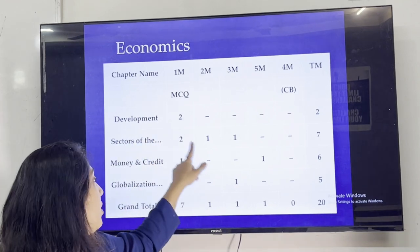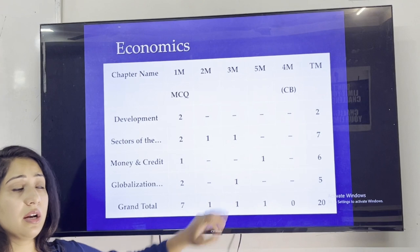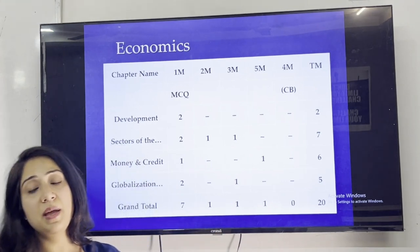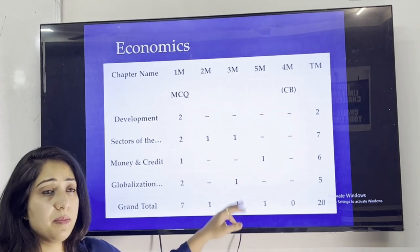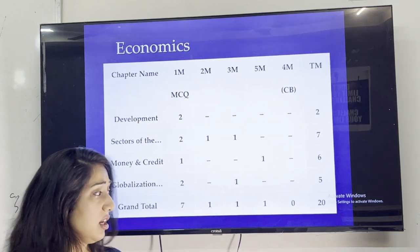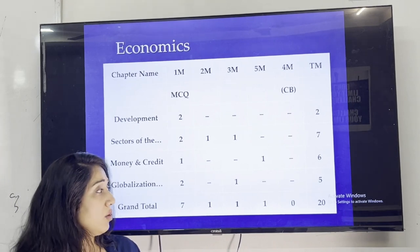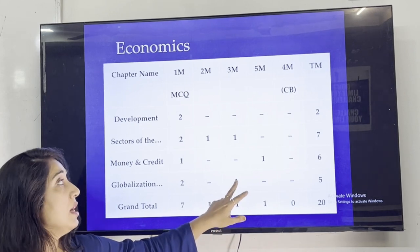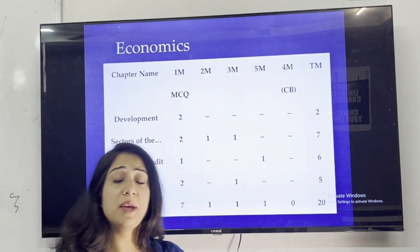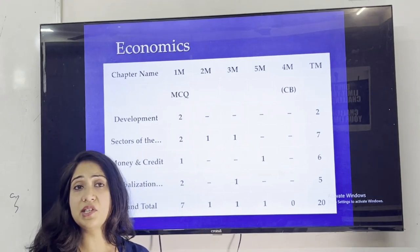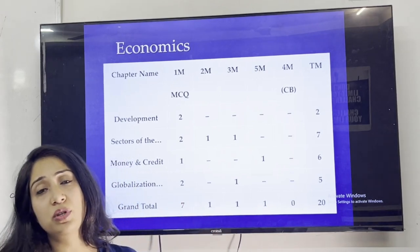Moving on, then we will do globalization. The weightage of globalization is not much, but the questions of 1 to 3 marks are very easy, like impact of globalization or why India removed trade barriers in 1991. These questions are generally very easy. After this, sectors of Indian economy - we get 1 to 3 marks and 2 mark questions. We don't need to learn very long answers. Our 3 mark answers should not be more than 60-80 words and 2 mark answers should not be more than 30-50 words.